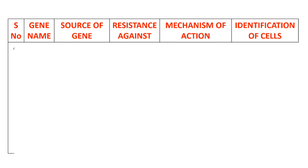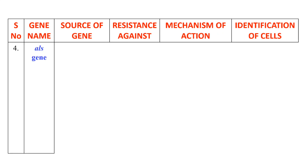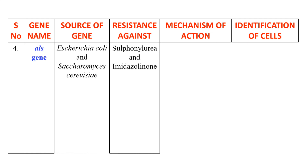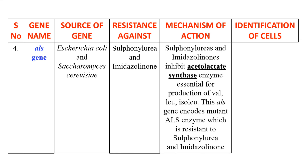The next example is the ALS gene. The source of this gene is E. coli and Saccharomyces cerevisiae. It provides resistance against sulfonylurea and imidazolinone. The mechanism of action: these two herbicides inhibit the enzyme acetolactate synthase.